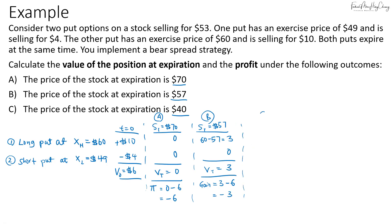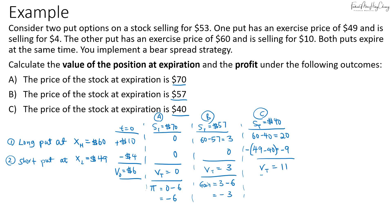For scenario C, if the spot price is $40, both options can be exercised. For the long put, the payoff is 60 minus 40, that's $20. For the short put, the payoff is 49 minus 40. Since you are short, it is a liability — you have to pay $9. Net, the value of the bear spread strategy is $11. The gain in this case is $11 minus $6, which is $5.